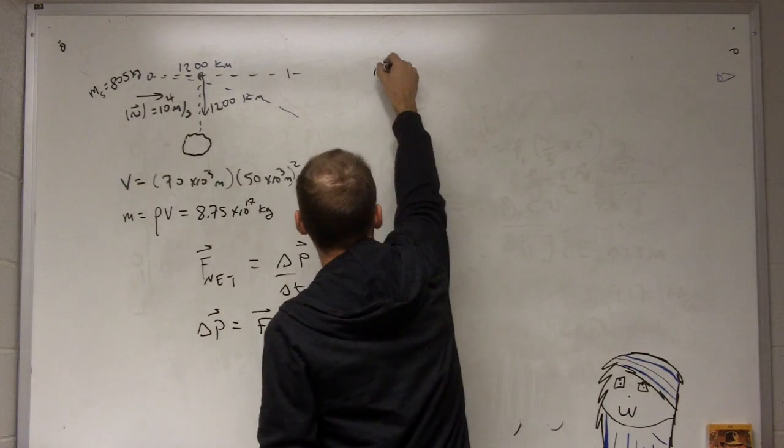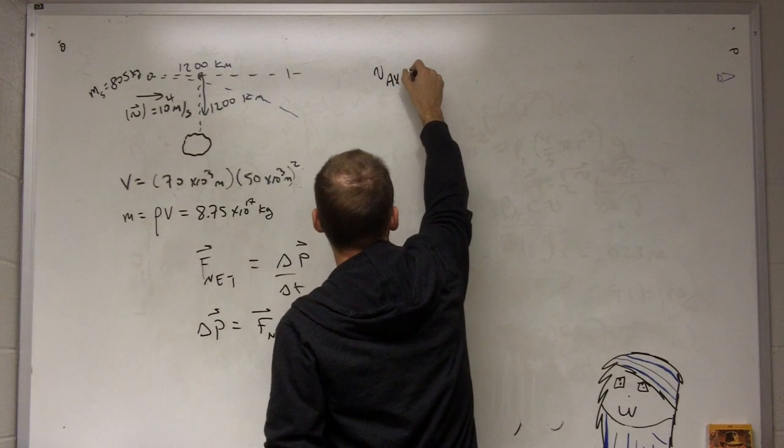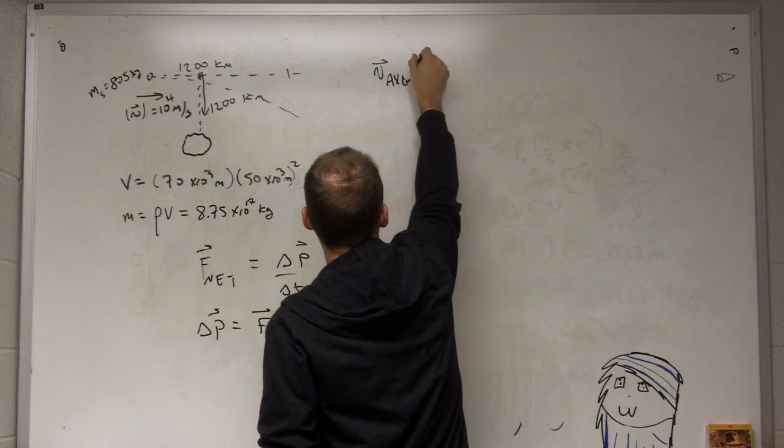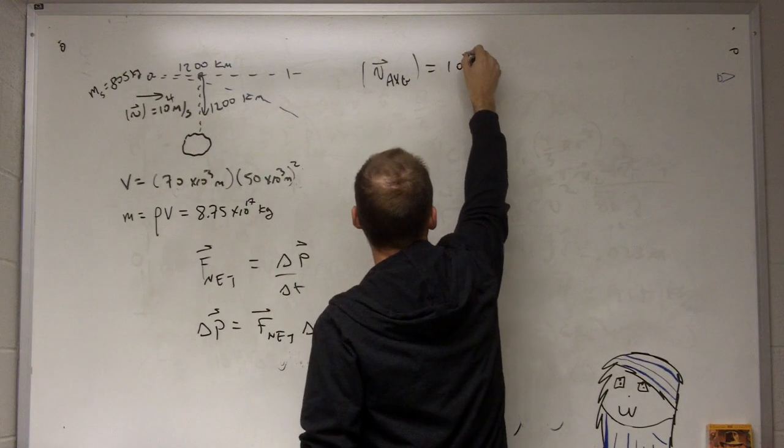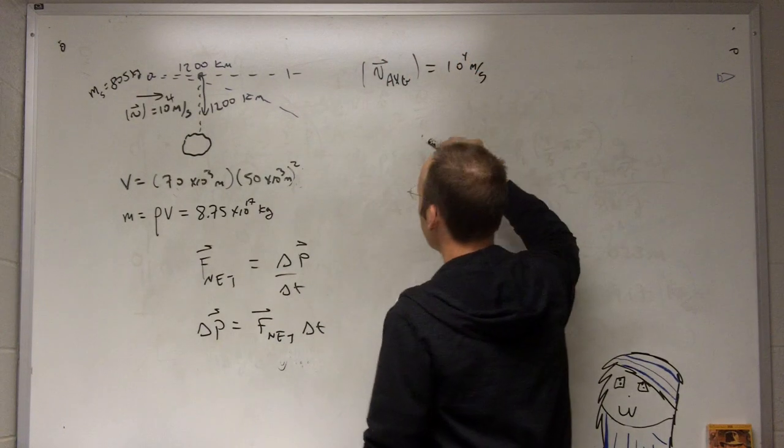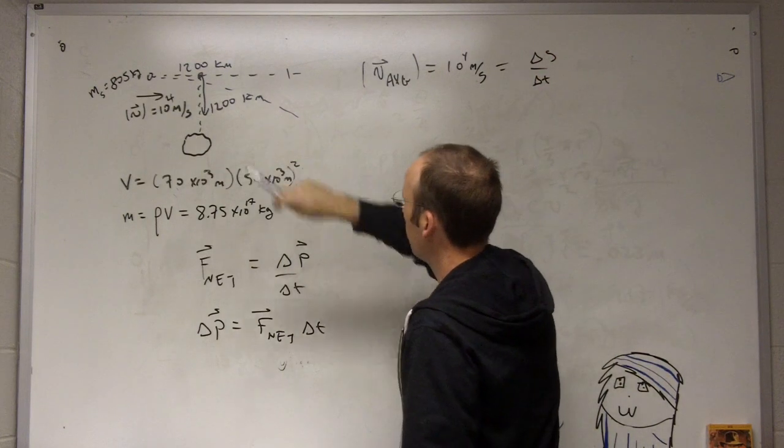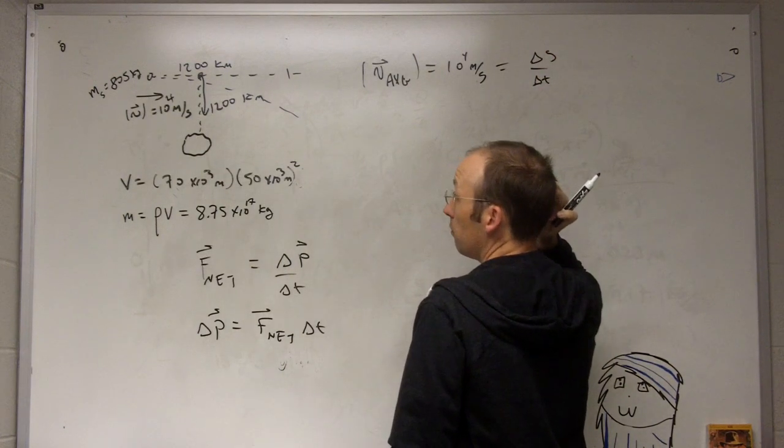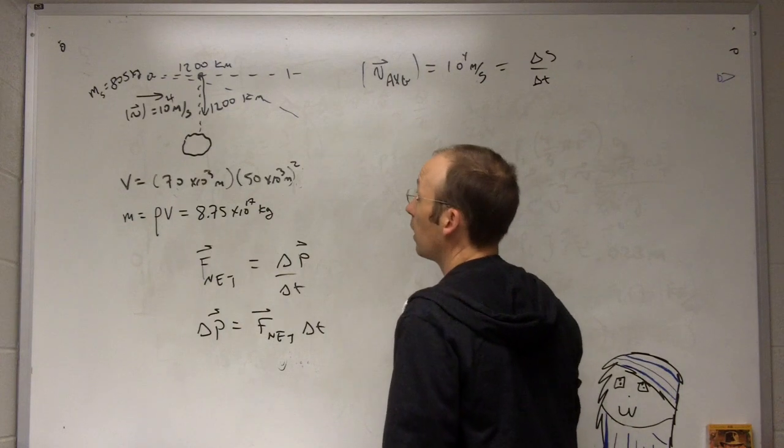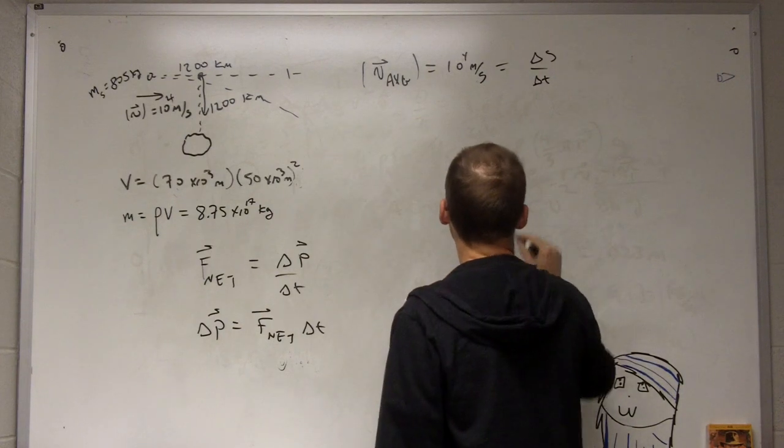So let's first find this ΔT. If I say the speed is 10^4 meters per second, it's going to be ΔS over ΔT. And if ΔS is 1200 kilometers, so I can solve for ΔT.